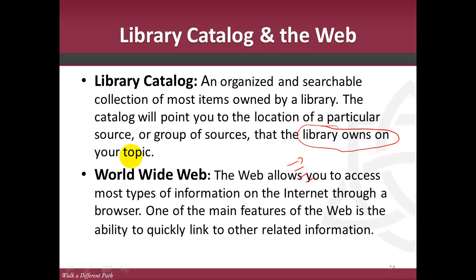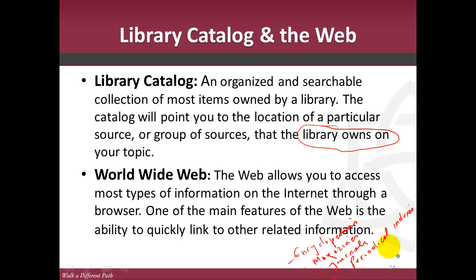And then there is the World Wide Web, or the Internet. It has all types of information. Keep in mind that not everything published on the web is information you can utilize or that may be useful for your research paper. So, to summarize what we've covered: the different types of sources you can select include encyclopedias, magazines, journals, periodical indexes, the library catalog, and the Internet.